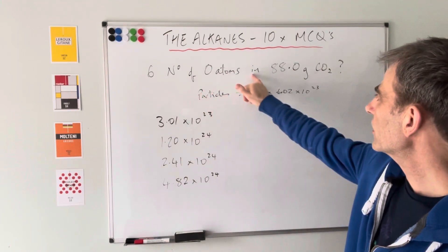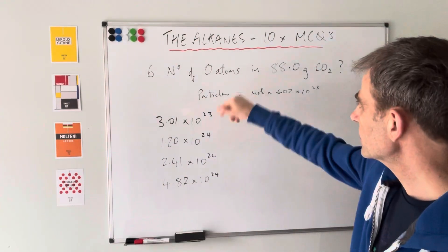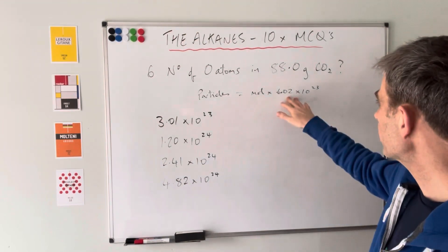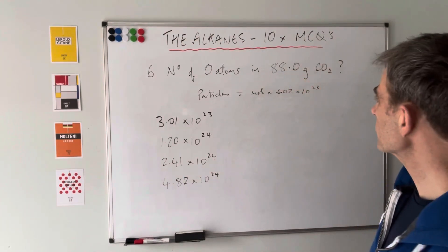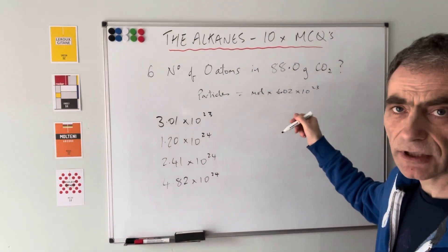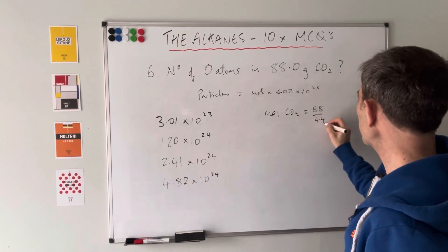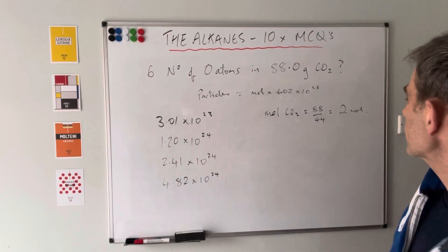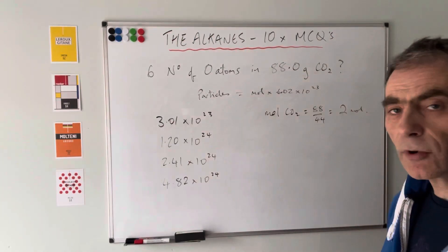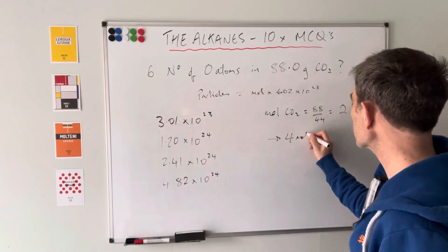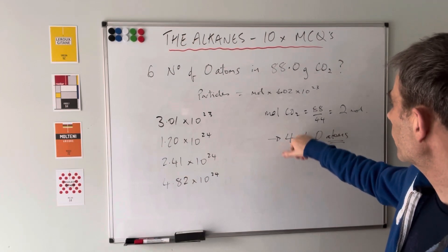How many oxygen atoms are there in 88 grams of carbon dioxide? To work out the number of particles, you multiply the number of moles by Avogadro's number, 6.02 × 10²³. Moles of CO₂ = 88 ÷ 44 (the Mr of CO₂) = 2 moles. One mole of CO₂ contains two moles of oxygen atoms, so two moles of CO₂ contains four moles of oxygen atoms.